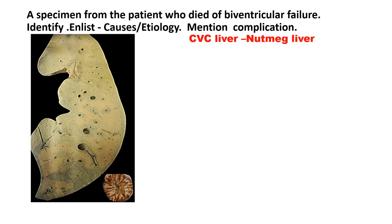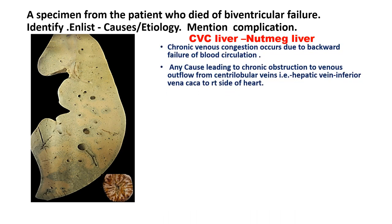Chronic venous congestion of the liver occurs due to backward failure of blood circulation. Considering the outflow from the liver: central veins drain into hepatic veins, which drain into the inferior vena cava, which goes to the right atrium, right ventricle, then through the pulmonary trunk to both lungs and then to the left side of the heart. Anything obstructive in this pathway leads to backward failure — that is the pathophysiological basis.